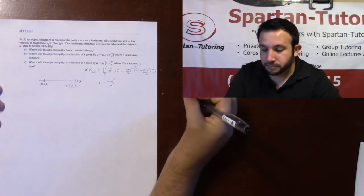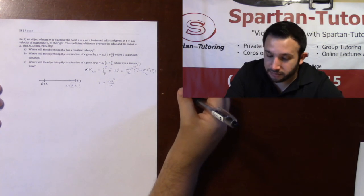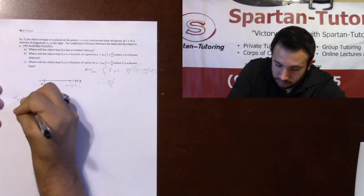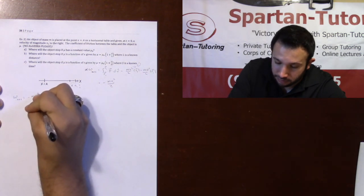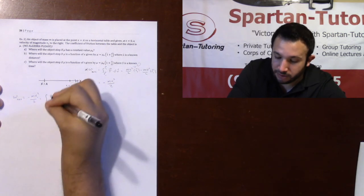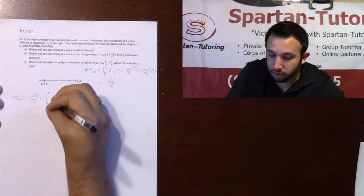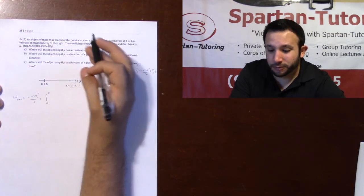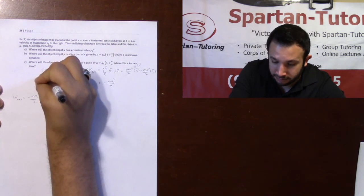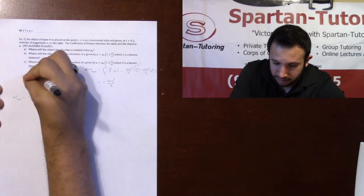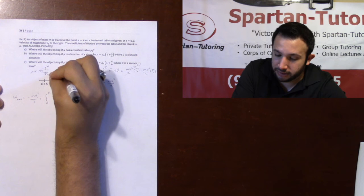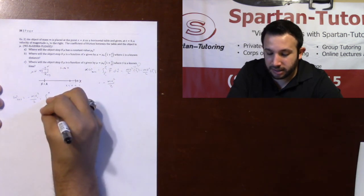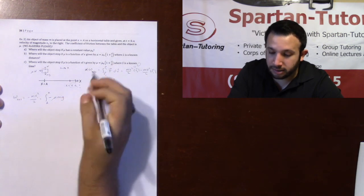Now that we have that, integrate all your forces. For part a, our net work, which was negative mv1² over 2, is equal to the integral from x equals a to x equals x — where that x is what I'm looking for — of my forces acting on this block. The only force acting in the x direction is friction. From a quick free body diagram we have mg, N, and mu times N. Because friction is pointed opposite to the positive direction — positive x is to the right — friction points to the left, making this negative mu·mg.